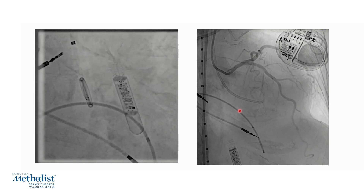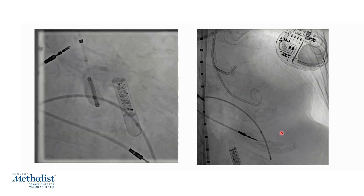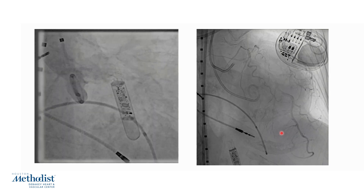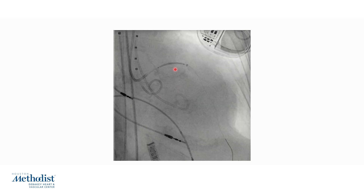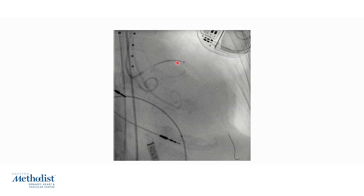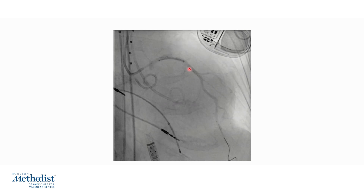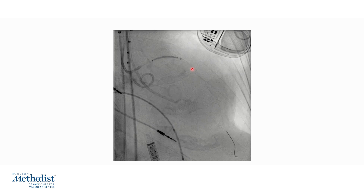This image on the right shows the coronary catheter engaging the left coronary. We take a picture of the left coronary system, and as noted, there is no significant obstructive coronary disease. Our plan was coronary protection, so we placed a guide extension catheter into the LAD with a stent positioned inside the guide extension and parked in the proximal LAD. We always take an angiogram to confirm good flow around the guide extension catheter to ensure the patient doesn't become ischemic during the procedure.